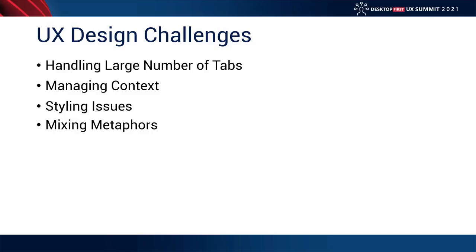We've all seen and interacted with tab controls, and they work quite well. However, there are challenges when it comes to UX design. One of the first is how do we handle a large number of tabs? This is prevalent across use cases — whether it's separating views, options dialogs, or the tab document model where we might have many documents open. How do we manage that with tab controls? Is that really even the best choice?